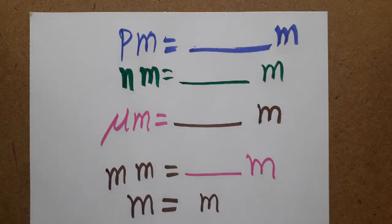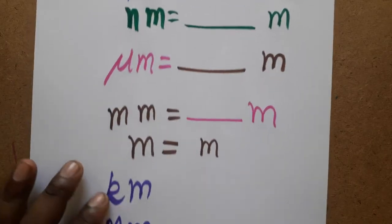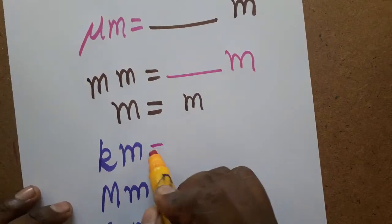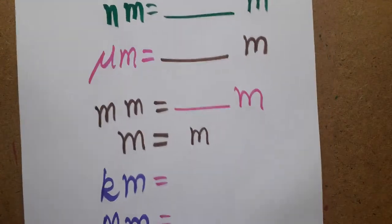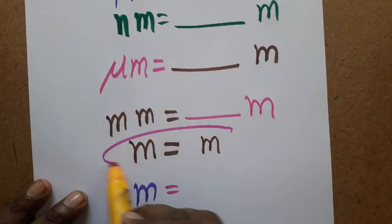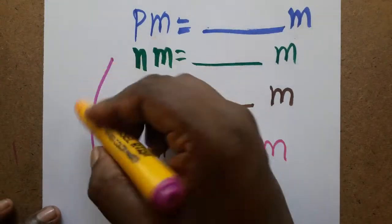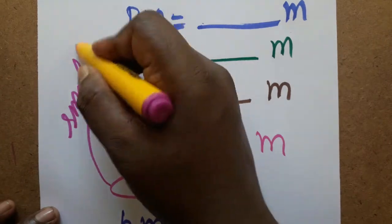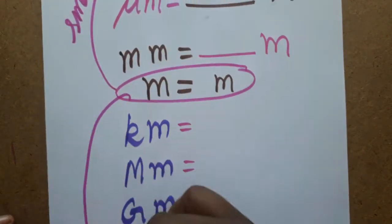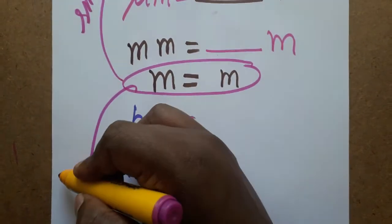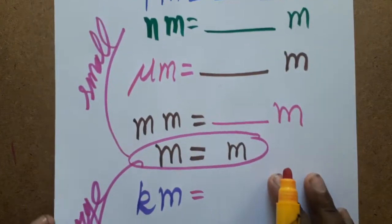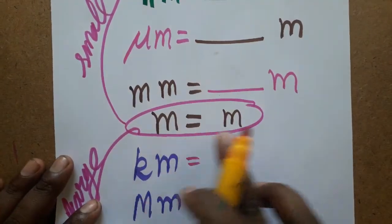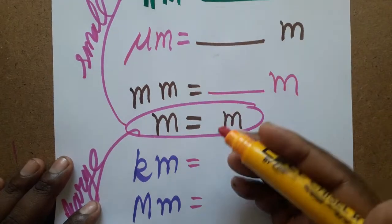Today we are going to see all prefix unit conversions with the power of 3 — only plus 3 or minus 3. We will start from meter. Smaller values go below meter, and larger values go above meter.